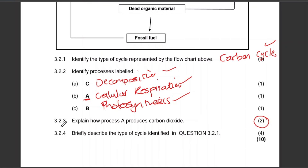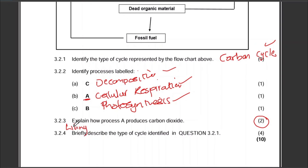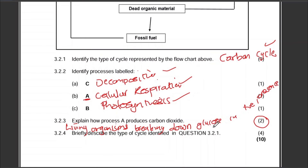Living organisms break down glucose in the presence of oxygen in order to produce ATP energy, and the byproducts are water and carbon dioxide. That's how you get your two marks.